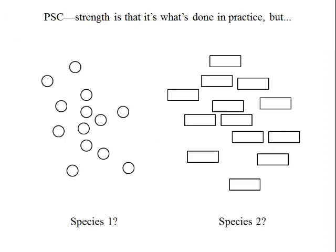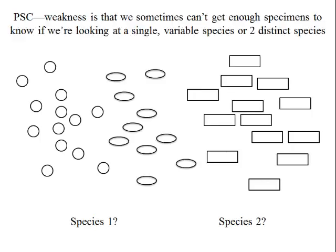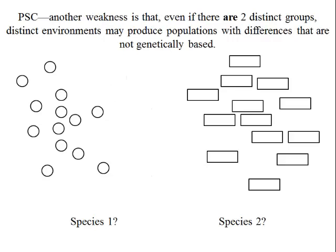The strength of the phylogenetic species concept is that it's basically what we end up doing in practice — looking at specimens in museum drawers and identifying groups sharing a bunch of characteristics that differ from other groups. The weakness is that if you haven't collected completely, it might be one variable species and you just missed the intermediates between the shapes. Also, two fairly distinct groups could share characteristics where differences are environmentally rather than genetically based — another potential weakness of the phylogenetic species concept.